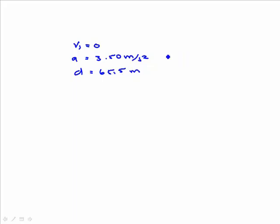Then the unknown is the final velocity. So final velocity is unknown and in this case, since there's no mention of t, we use the equation that doesn't have t in it. Vf squared is equal to vi squared plus 2ad.